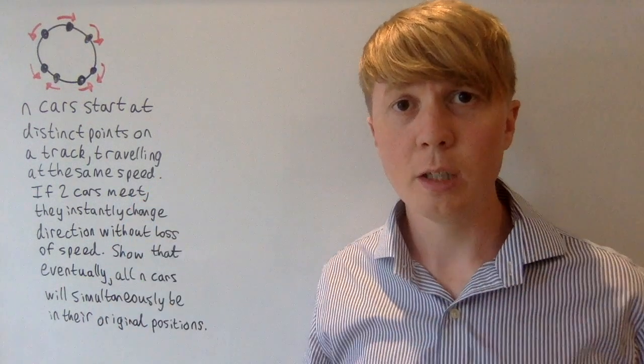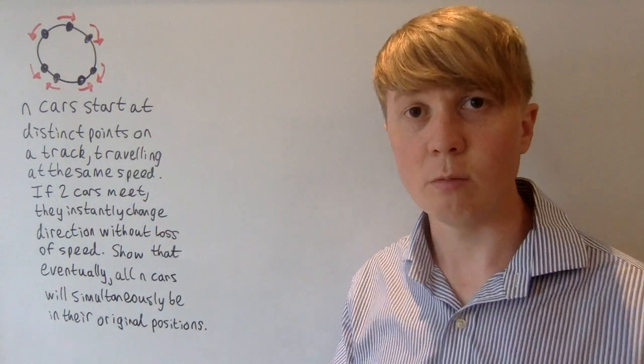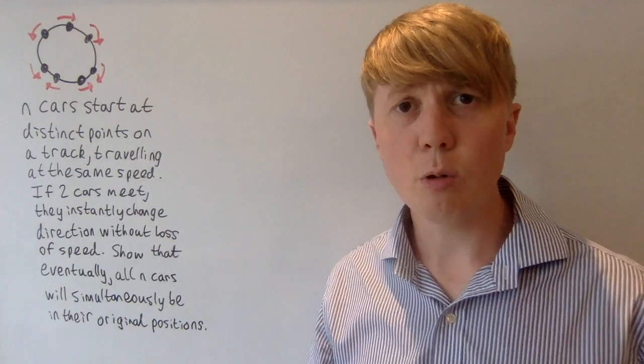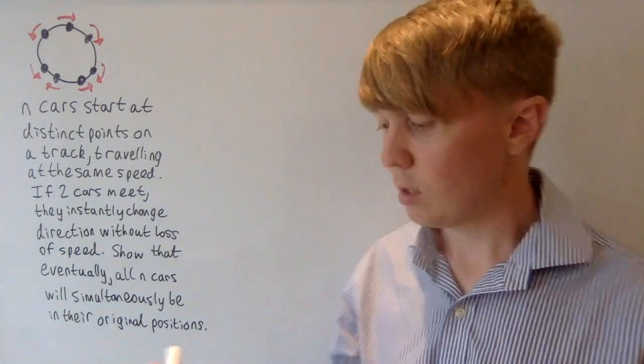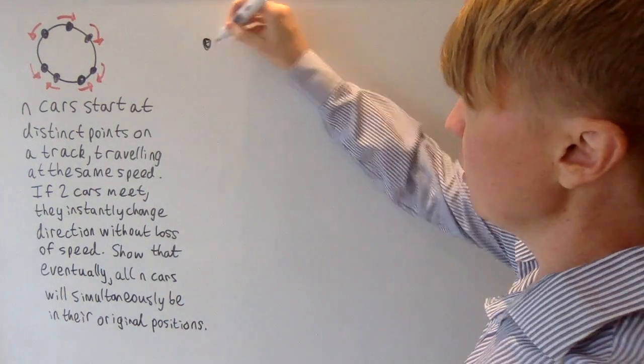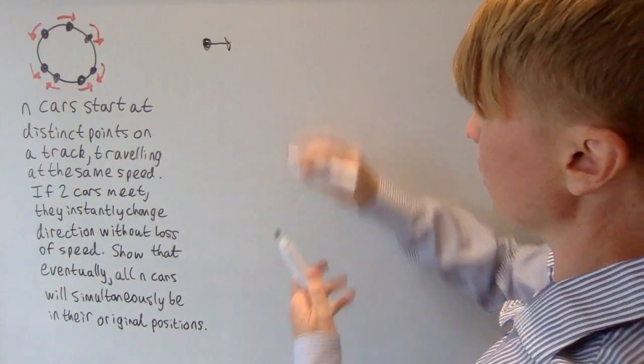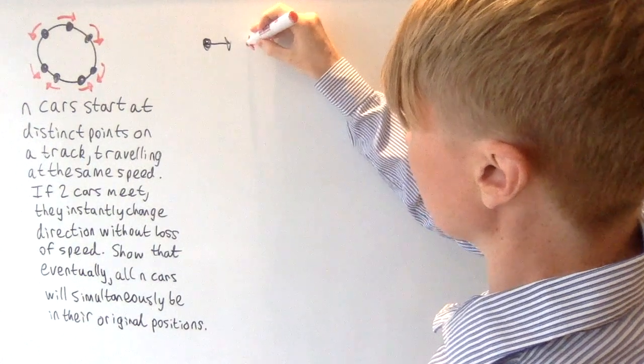this is actually equivalent to having our two cars just passing through each other. So just to draw a picture for this, let's say we've got a black car and a red car, which are about to collide with each other.